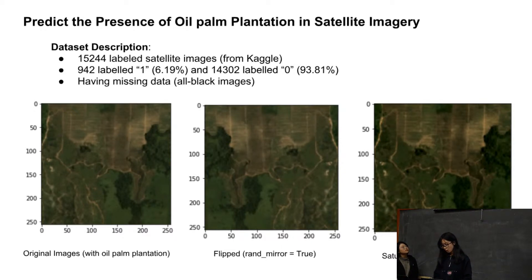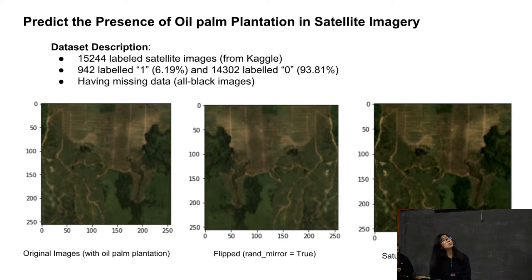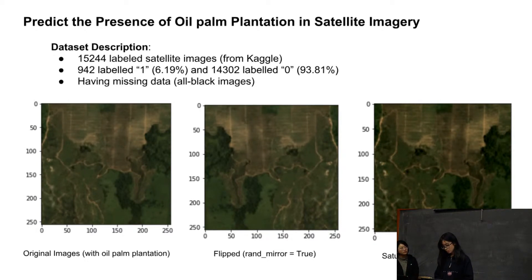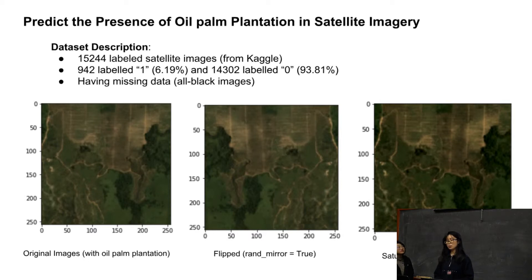To address this issue, we implement image augmentation to generate synthetic images. We apply several image translations to our original dataset. The second image on the screen comes from a horizontal flip of the original one, and the third image comes from increasing the saturation of the first one. Image augmentation makes the dataset more representative of many different positions, angles, and lightings, and thus improves our model's ability to generalize and correctly label the images.